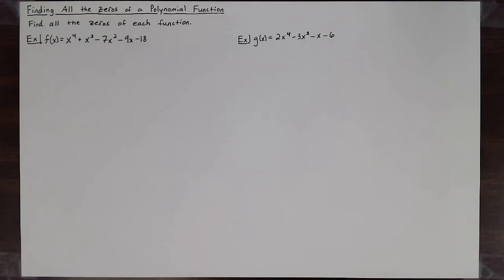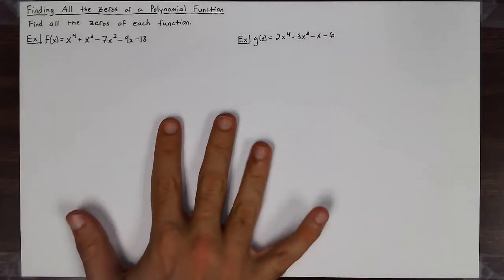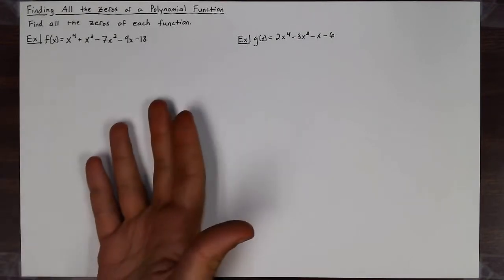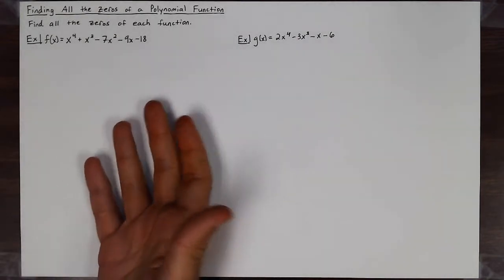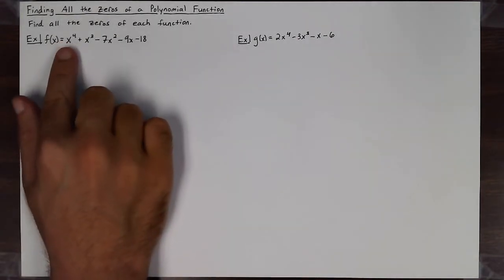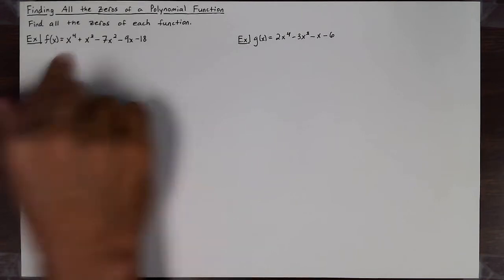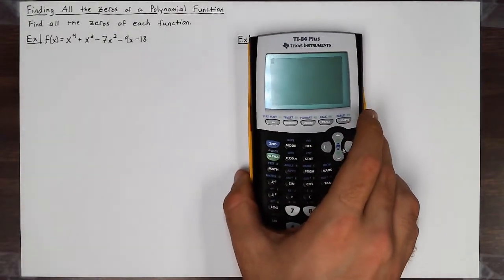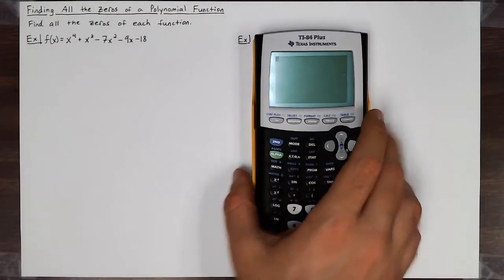In this video we're going to learn how to find all the zeros of a polynomial function. In the last lesson we learned about the Fundamental Theorem of Algebra to help us indicate how many zeros we need to look for, and now we're going to learn how to find all of them. I'm going to show you how to use technology to assist you in finding all of them.